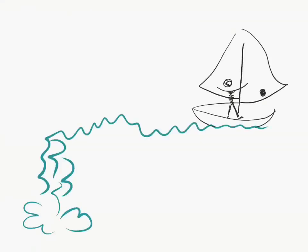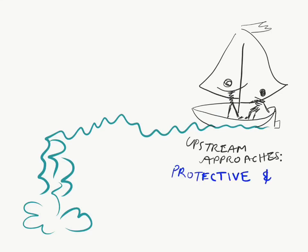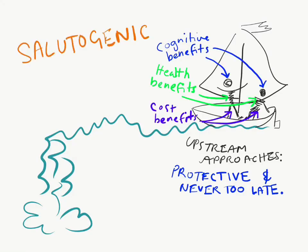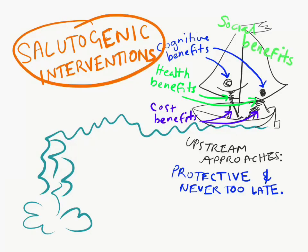Academics researching salutogenics have discovered that there are real benefits in upstream interventions, and that these don't only affect health, but cognition, general ability, and social function also. They've also discovered that it's never too late, because these approaches are very protective and continue to yield benefits, even once death is in sight.